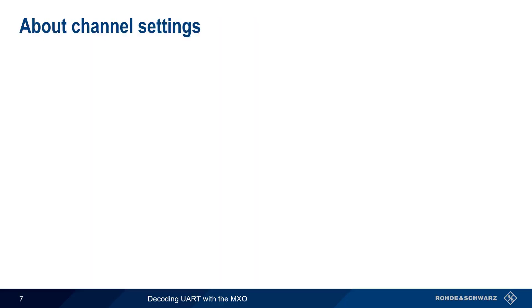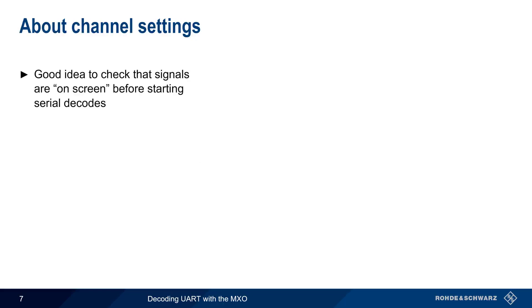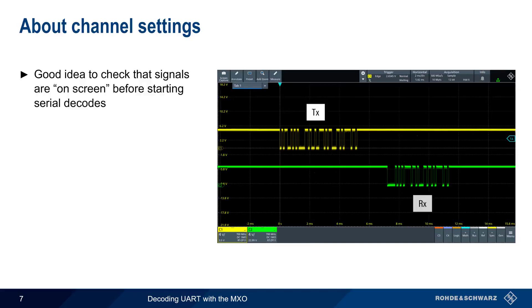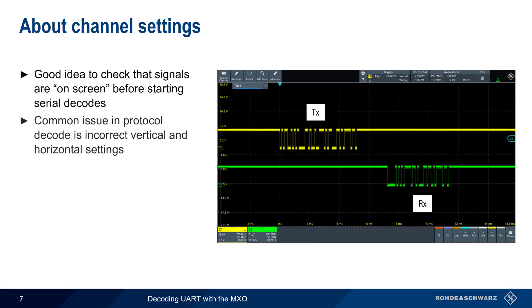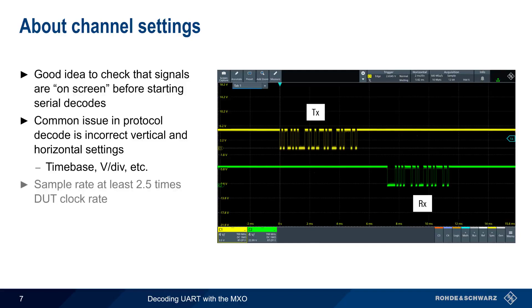At this point, let's pause to talk about channel settings. Before starting serial decodes, it's always a good idea to first check that both of the UART channels are on screen. In this example, the channels connected to the TX and RX lines appear on screen with appropriate vertical and horizontal scaling. The most common issue in serial decoding is incorrect vertical and horizontal settings, such as the wrong time base or volts-per-division setting, so it's best to visually verify these are set appropriately. Another potential issue is too small a sample rate — at least 2.5 times the DUT clock rate is the standard recommendation. However, given the very low bit rates of most UART implementations, this is a much less common issue.